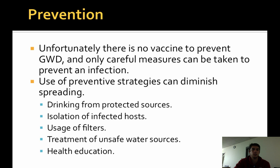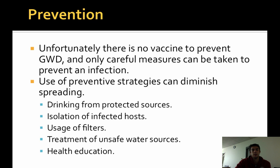Unfortunately, there is no vaccine to prevent the disease, and only careful measures can be taken to prevent infection. Through the use of several strategies, Guinea worm disease can be prevented, such as drinking from protected water sources, or isolating the infected host from contaminating water sources, because once infected and past the incubation period, they shed millions of larvae. Also, the use of filters or treatment with larvicides — provided by healthcare services — will kill the water fleas. Further education of the community about the disease can also help prevent further contamination and infection.